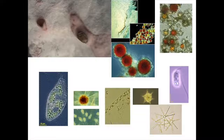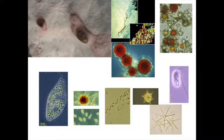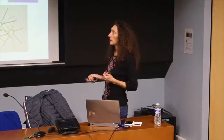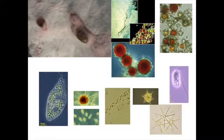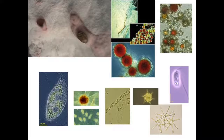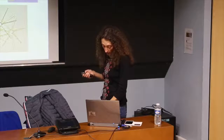At high temperatures only prokaryotes survive, and at the very upper limit only archaea, but in cold environments you can also have bacteria, archaea, and many types of microbial eukaryotes. For instance, living on snow you can see pinkish areas — these are micro-eukaryotic microalgae that live on snow.